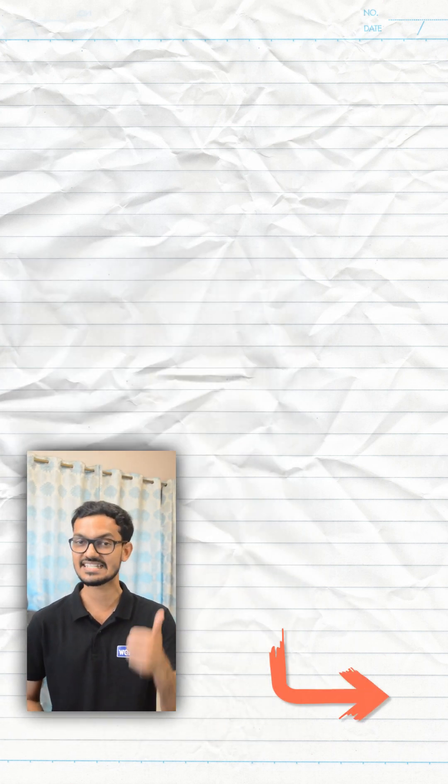If you know how to find the square of a number ending with 5, then you may easily find square of a number ending with 6. If you want to know how to find square of a number ending with 5, check the description. Now coming back to square of a number ending with 6.